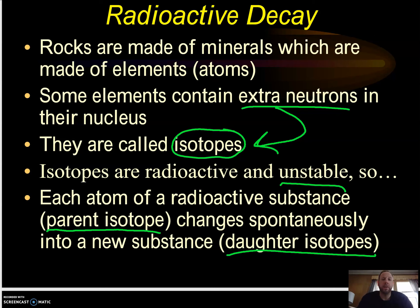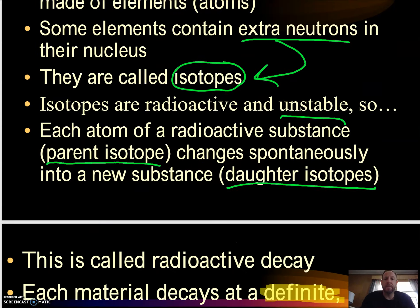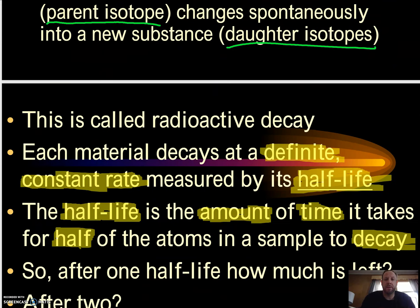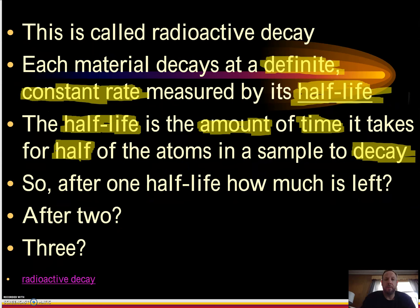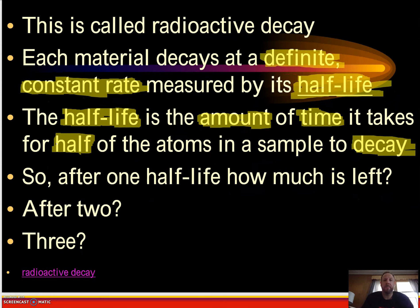They change from an unstable parent to a stable daughter isotope by losing neutrons. We're not going to go too far into the chemistry and physics, but what you have to remember is we go from unstable to stable, from parent to daughter. This process is radioactive decay, and each decay is at a definite constant rate — so we know how long it takes to break down.